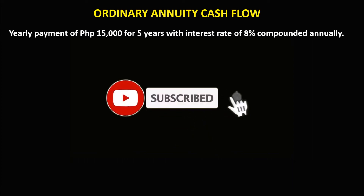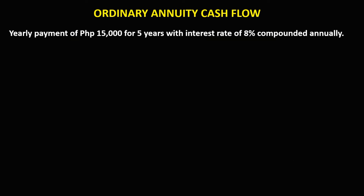Welcome to MathStorya. Let's solve this problem. The cash flow of an ordinary annuity — given a yearly payment of 15,000 pesos for 5 years with an interest rate of 8% compounded annually. Since the periodic payment is yearly and the interest rate is compounded annually, this is an example of a simple or ordinary annuity.